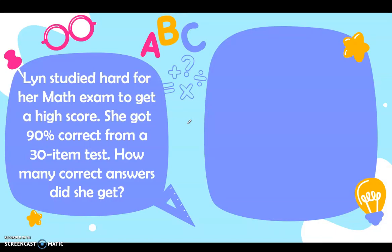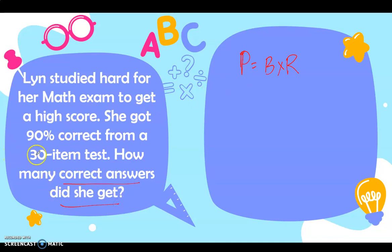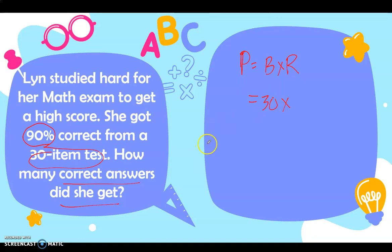Let's answer the problem using the formula. We have P equals Base times Rate. The percentage is missing because the question asks how many correct answers she got — that is a part of the 30-item test, and she got 90% correct. So for the base we have 30, times the rate, which is 90%. Take note that you cannot multiply percent directly.